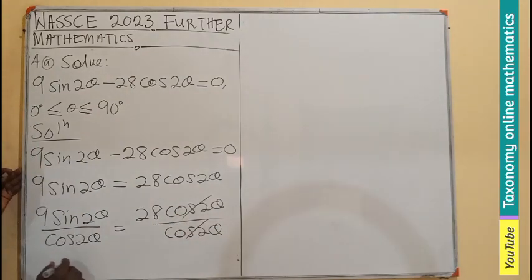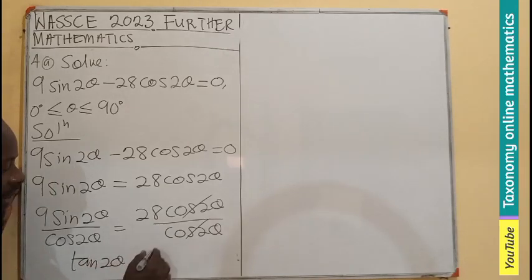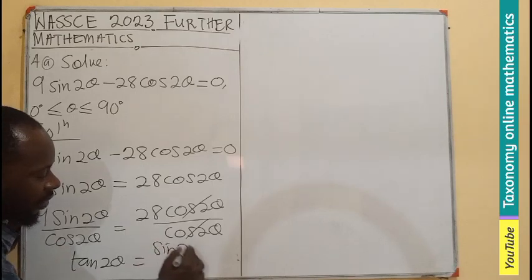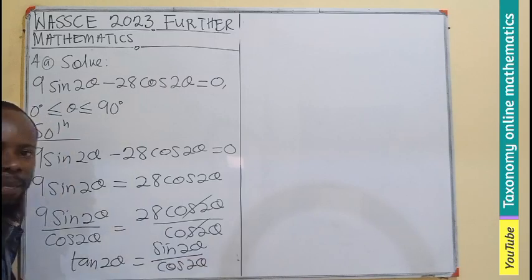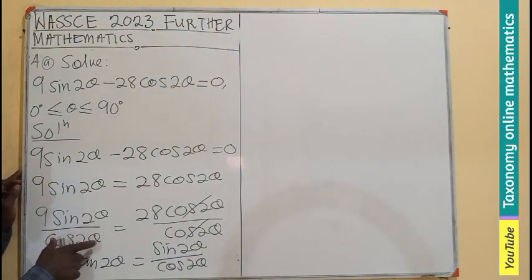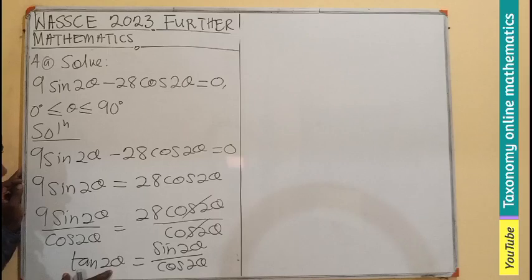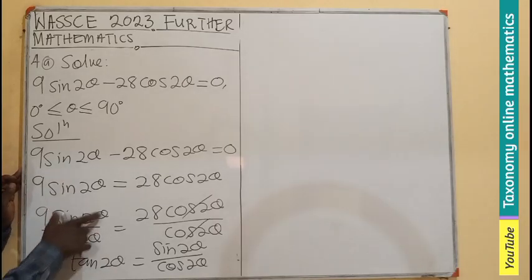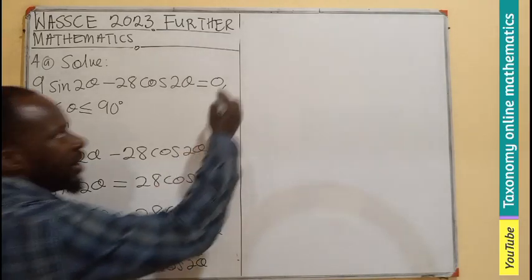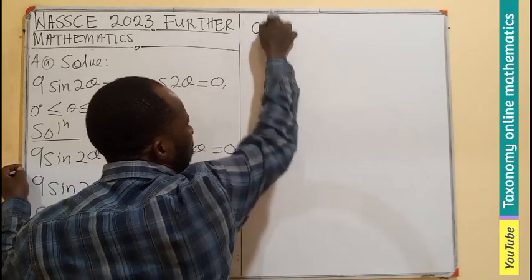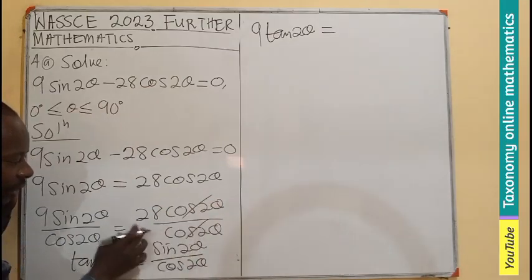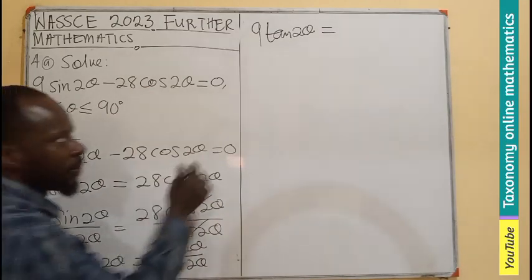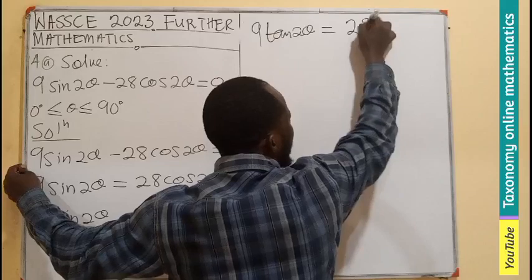Then here we know that tan 2 theta is the same as sin 2 theta over cos 2 theta, so this fraction will now become just the tan. The 9 will be multiplying tan 2 theta equals to 28 after cancellation.